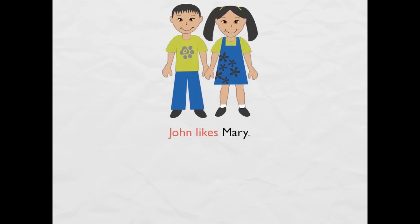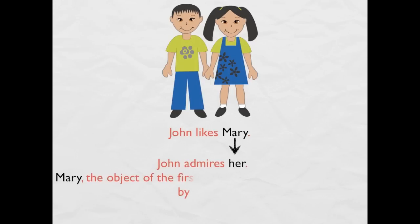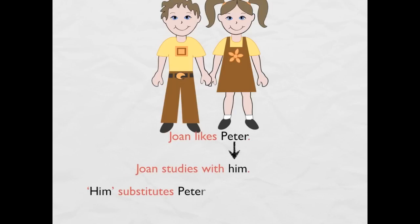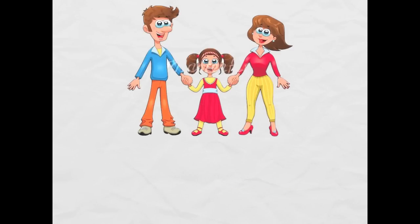Another example: John likes Mary. 'Mary' I can substitute for 'her' — John likes her. Another example: John likes Peter. I can put 'him' in the place of Peter. John studies with him. 'Him' substitutes Peter in the second sentence.